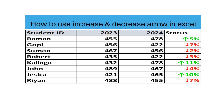Hi friends, today's topic is how to use increase and decrease arrows in Excel. Students are present and we will compare their scores. Whatever they scored in 2023, we will calculate the increment or decrement percentage. If it is an increment, it will be shown in green with an up arrow, and if it's a decrement, it will be shown with a down arrow in red color.